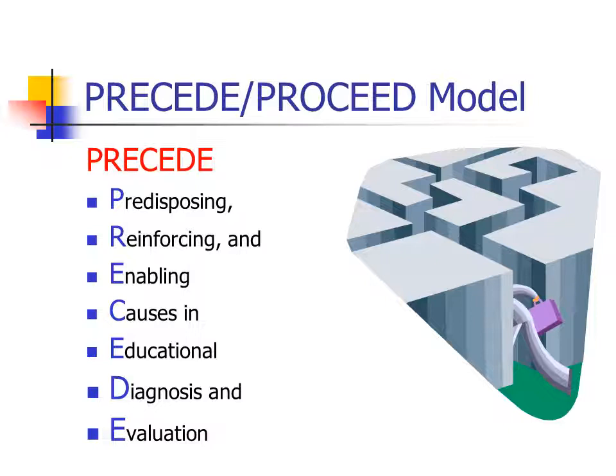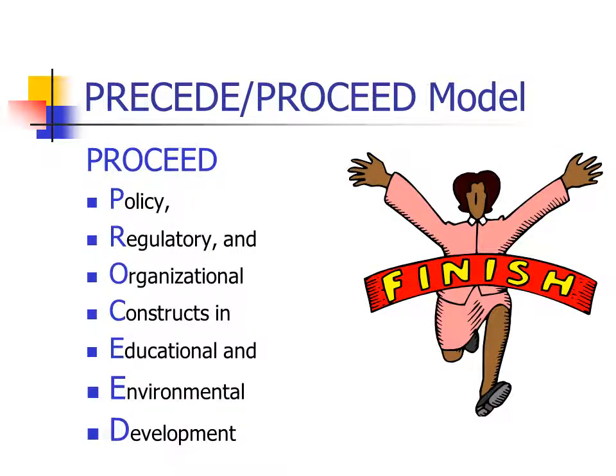For PROCEED, focus on the words: policy is critical in health promotion; regulatory refers to rules and regulations that govern our behavior; organizational constructs look at the culture of an organization; and then educational and environmental development. Some of our strategies can be educational in nature, while others involve changing systems and the environment to make it easier for people to make good choices. Keep that acronym in mind as we look at the flow of the various stages for the PRECEDE-PROCEED model.